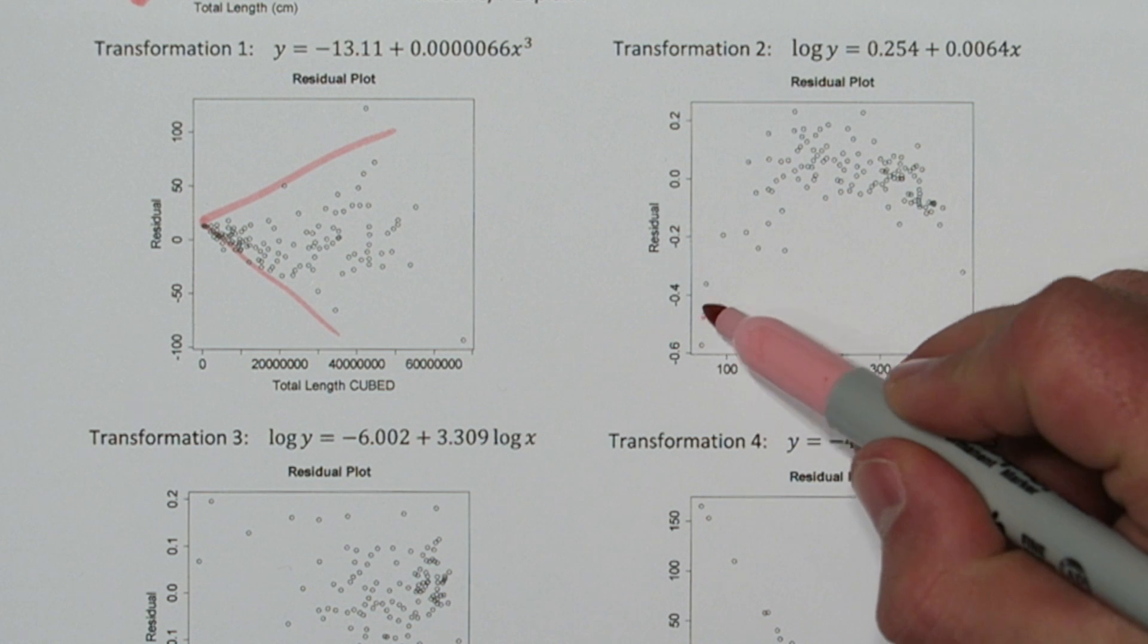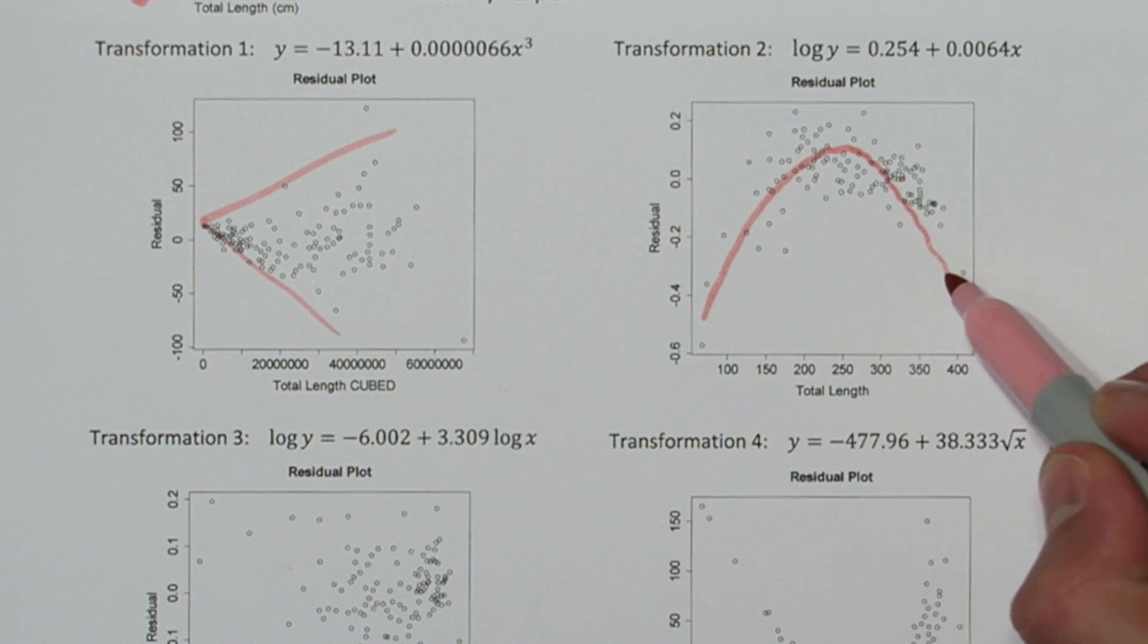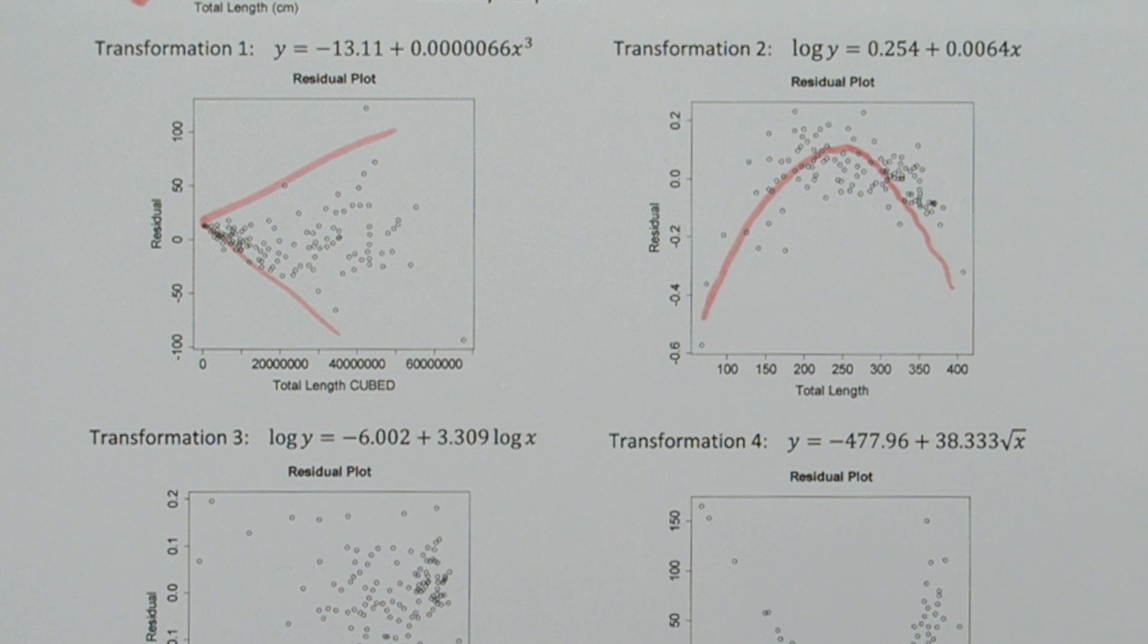In transformation 2, there's a pattern in the residuals. So this means our model can be improved on. So transformation 2 did not achieve linearity either.